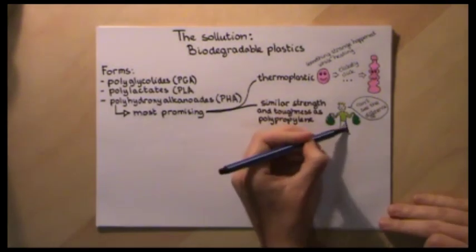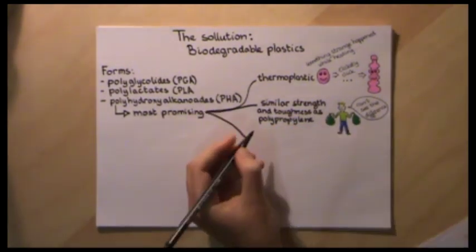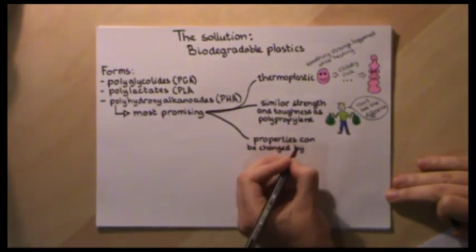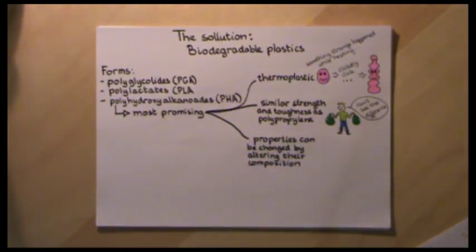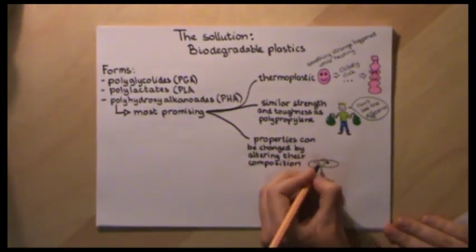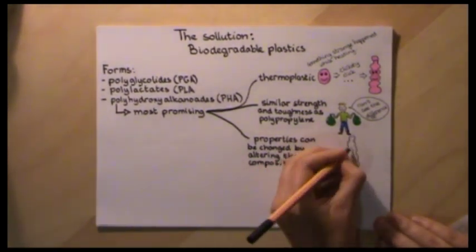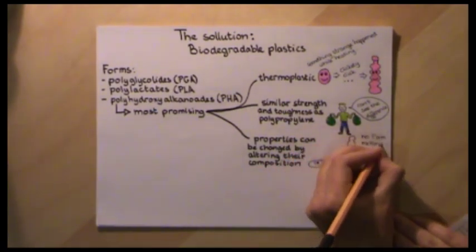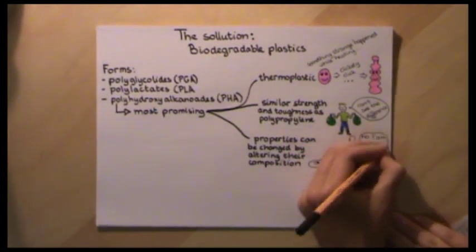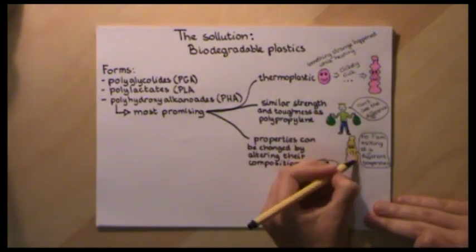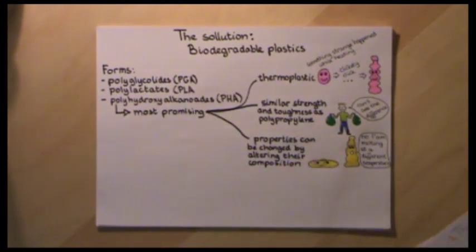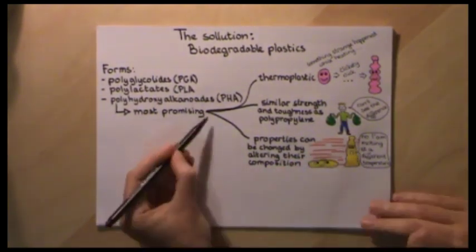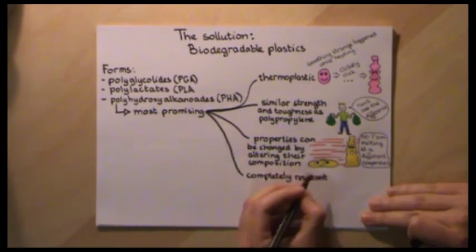are among the most promising bioplastics because they are thermoplastics, meaning they belong to the big group of plastics that can be molded into a new shape when heated, and because their strength and toughness are similar to polypropylene,